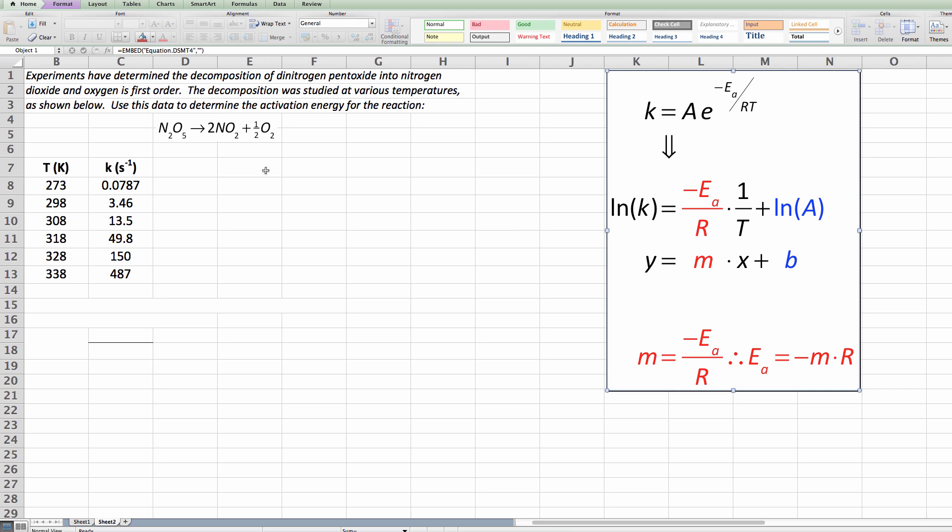All right, before we get going on analyzing this, a lot of people have questions about how in the world would we even get this kind of information? How do we get a rate constant? Well it goes like this. The first thing you do is you run the reaction at any particular temperature and you measure the initial rate. Once you've measured the rate you can then calculate the rate constant using the rate law, because our rate law is rate is equal to K times N2O5 to the first order.